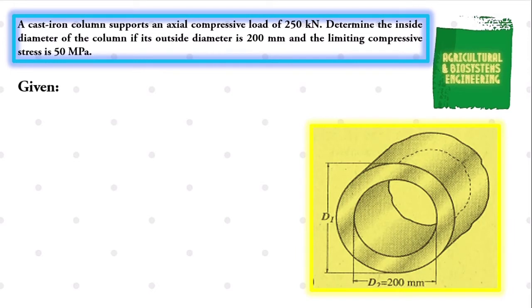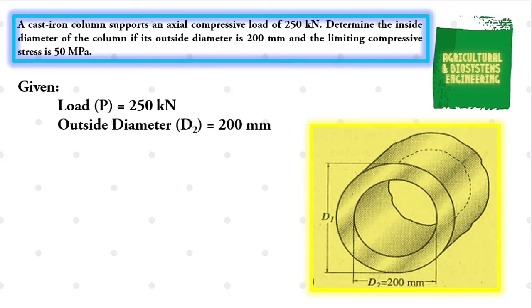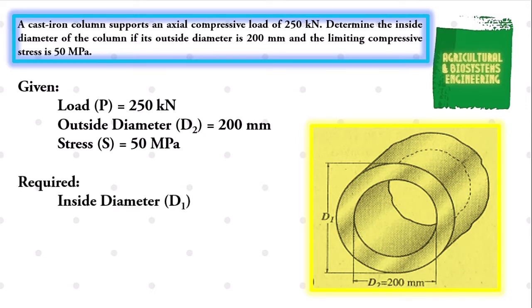To continue, we first identify our given. We have the load, symbolized by P, is equal to 250 kN. The outside diameter, symbolized by D2, is equal to 200 mm. Third, the stress symbolized by S is equal to 50 MPa. The required in the problem is the inside diameter, symbolized by D1.